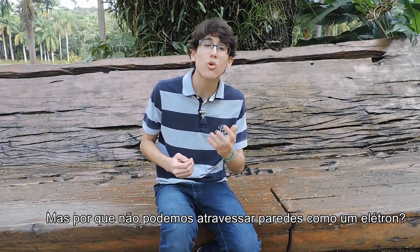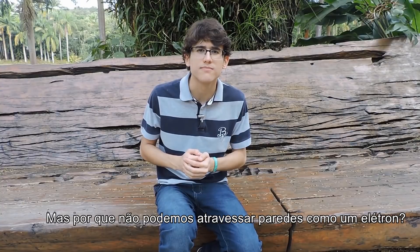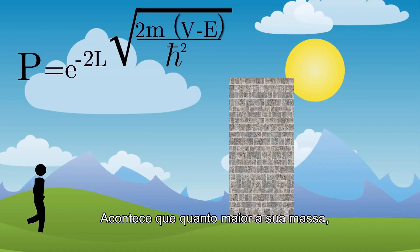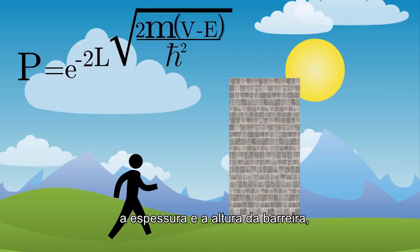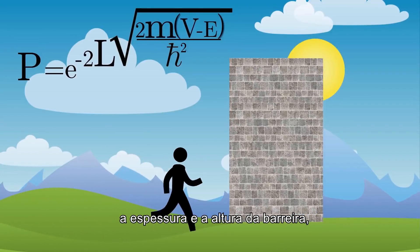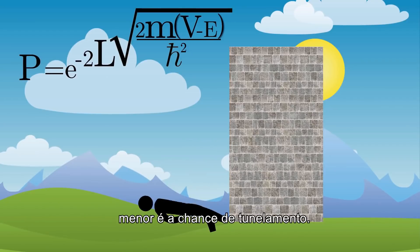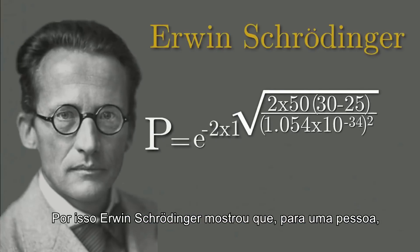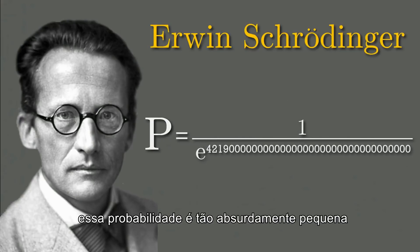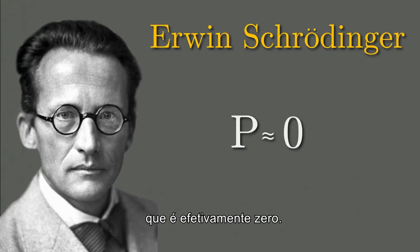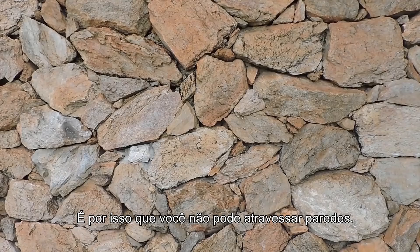But why can't we go through walls like an electron? It turns out that the greater your mass, the thickness and height of the wall, the smaller is the chance of tunneling through. Hence, Erwin Schrödinger showed that for an average person, this probability is so absurdly small that it is effectively zero. That is why you can't travel through walls.